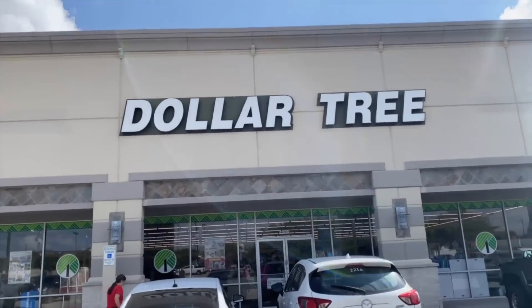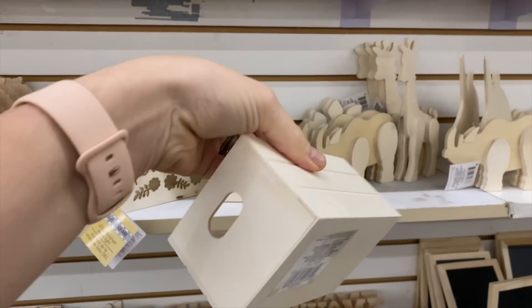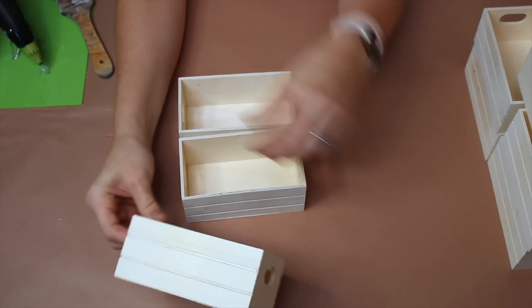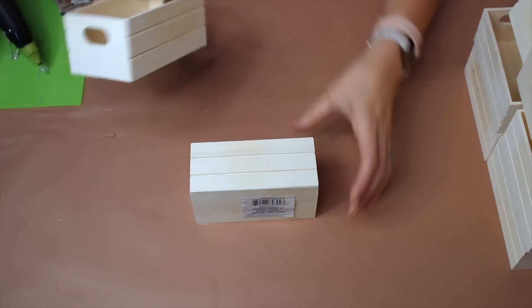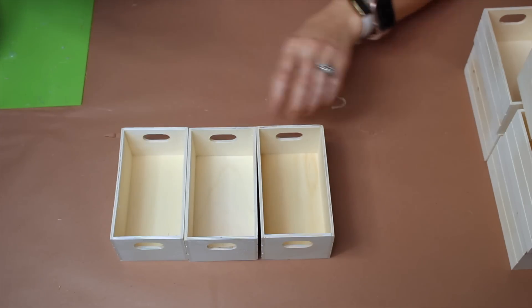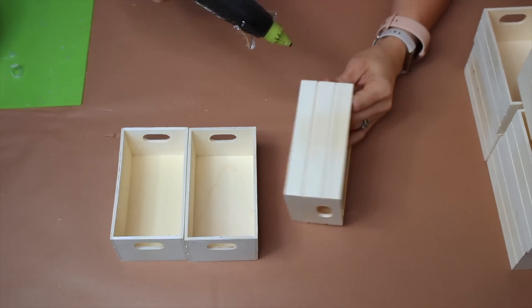So we're going to start with 12 of these really cute little crates from Dollar Tree and we are going to first glue them together. So we're going to start with a hot glue gun, one of my favorite tools in my DIY arsenal.